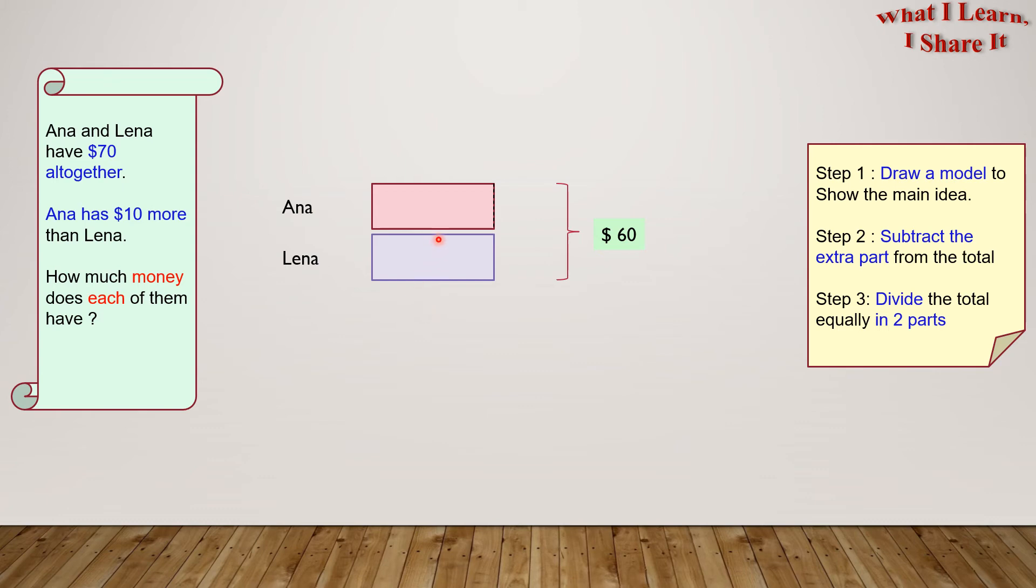In order to find each of these parts, we can divide the total by 2. So, 60 divided by 2 equals 30. Let's put 30 in these two boxes.